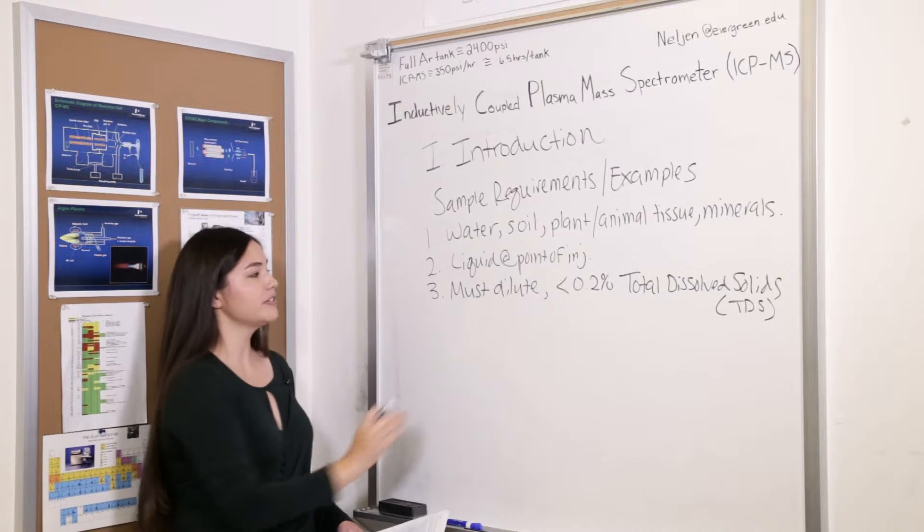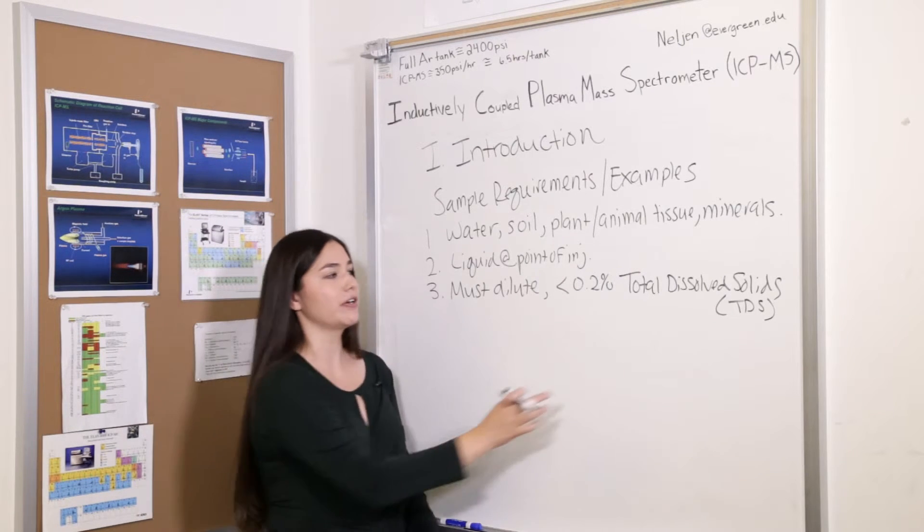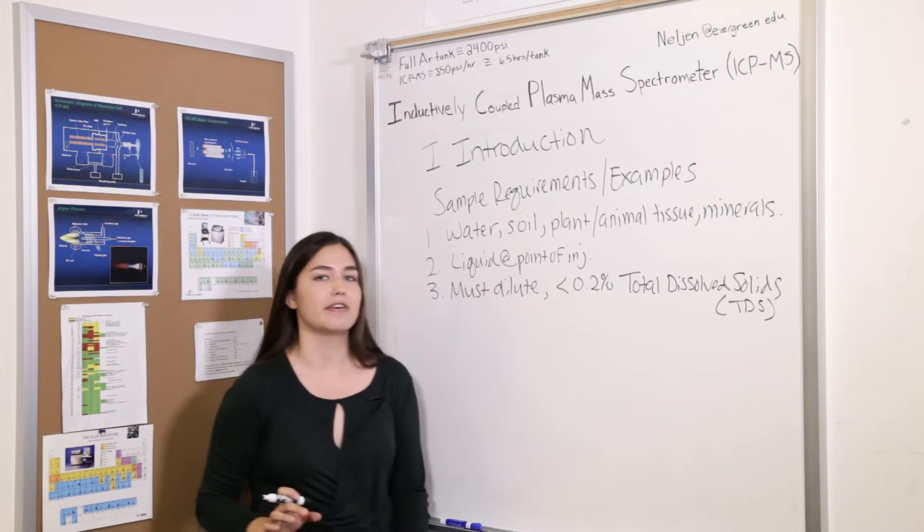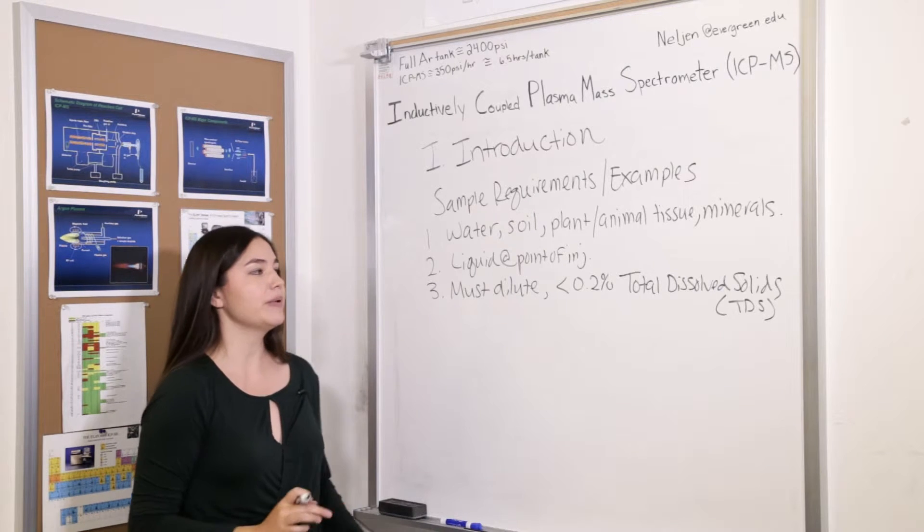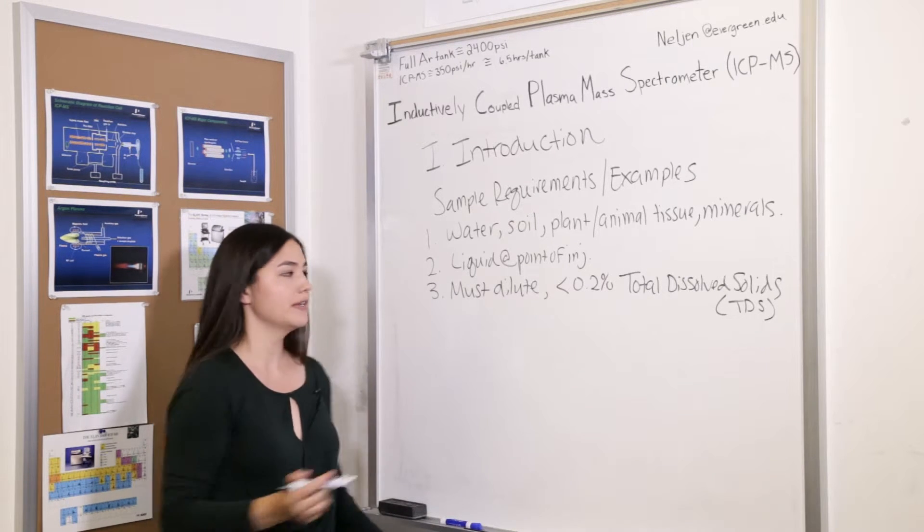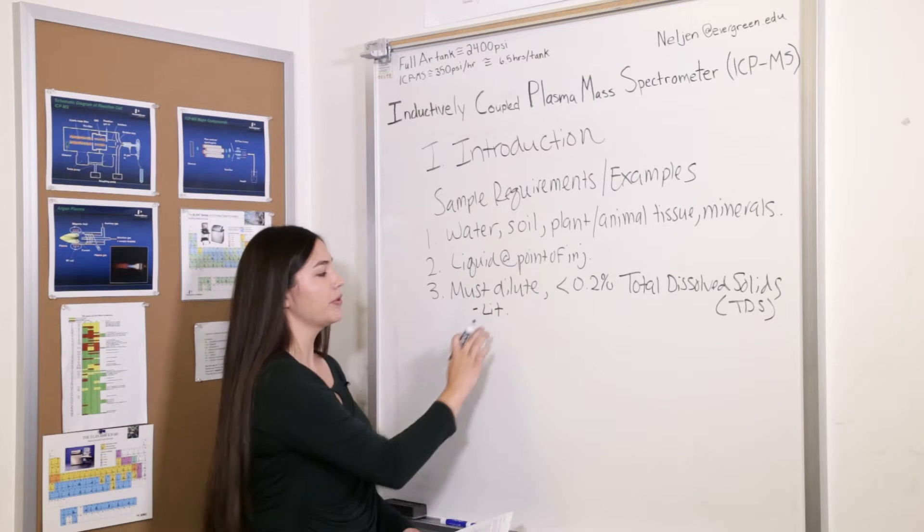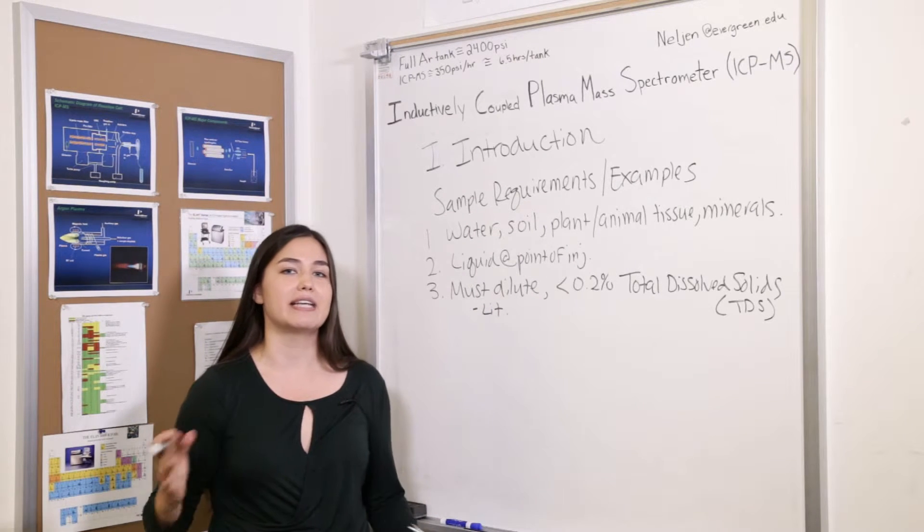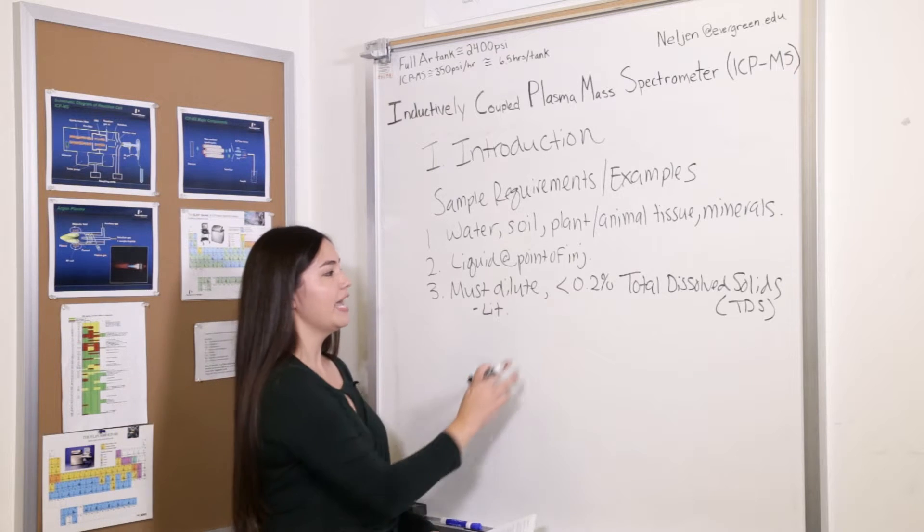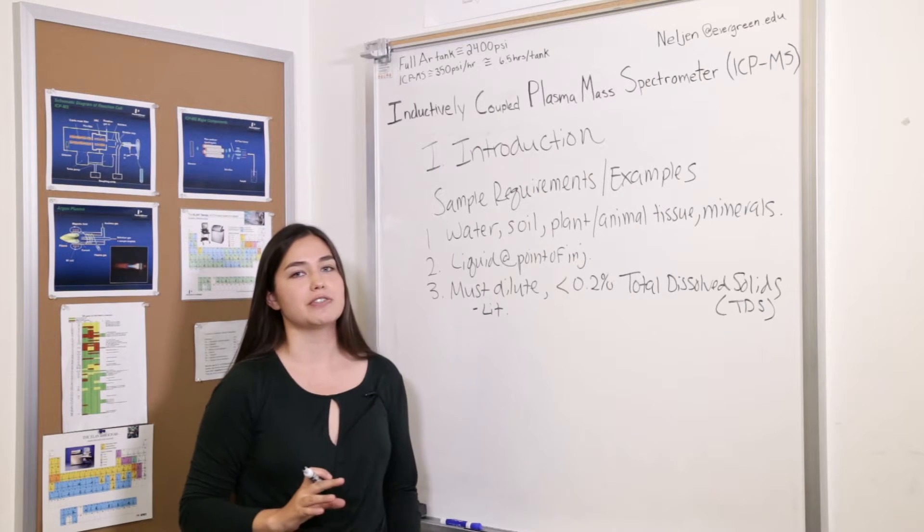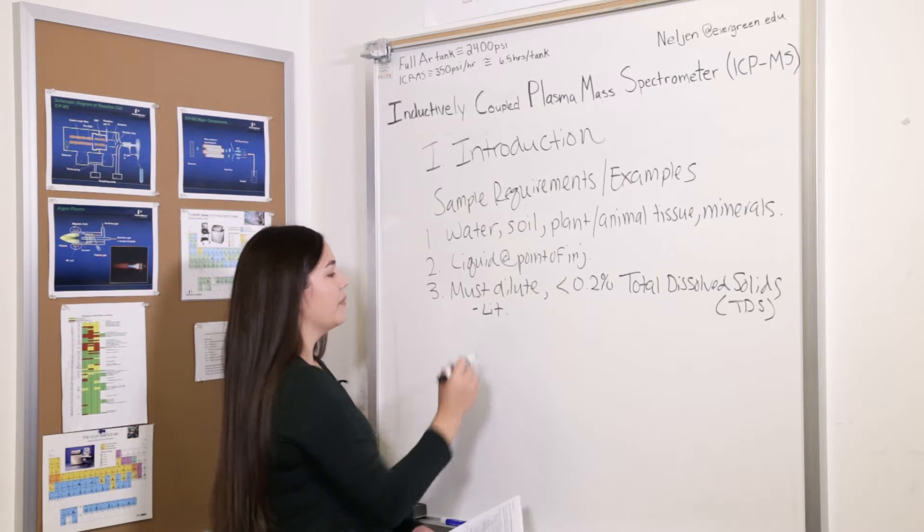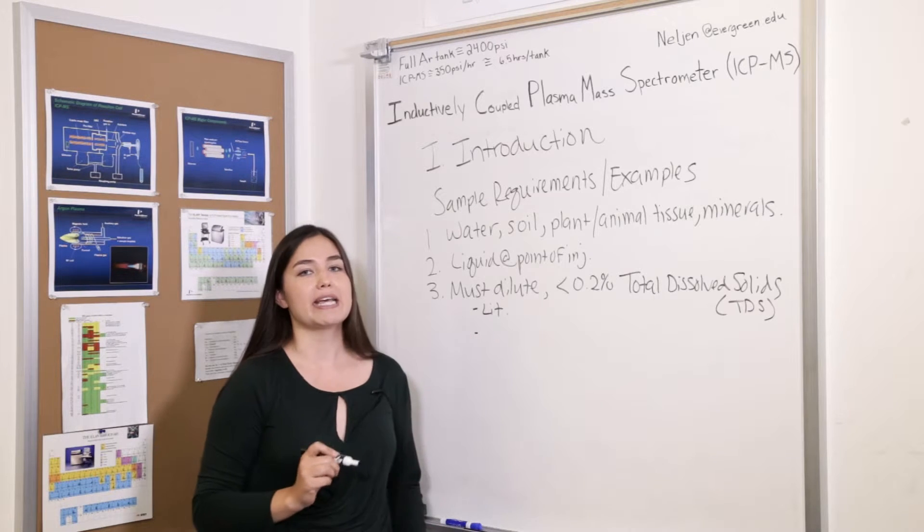Now we want to base the dilution of our samples on our knowledge of the total dissolved solids of the samples. We can find this out in one of two ways. You can either reference the available literature, so look up other reports that have analyzed similar samples and it gives you an idea of what range that TDS is in, or you can determine it experimentally.